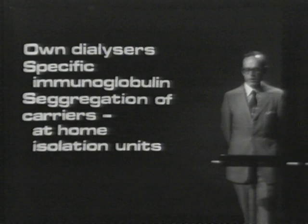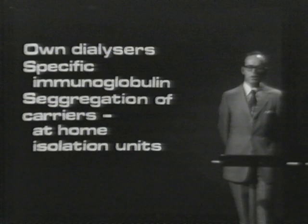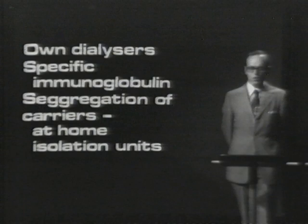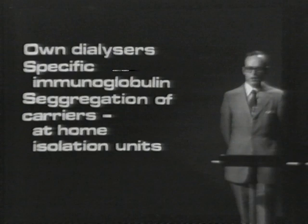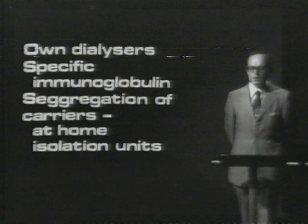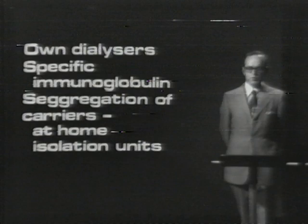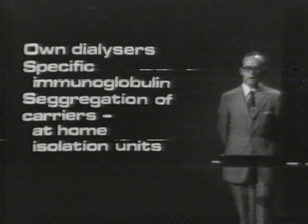The provision of individual dialysers is clearly not a practical solution. The use of specific Hepatitis B immunoglobulin is under trial. As for carriers, a patient who is a carrier of Hepatitis B antigen may be segregated at home or sent for treatment to isolation units. If the patient is on home dialysis, the infection may be spread to home contacts; on the other hand, staffing of isolation units can be problematic. At the present time, carriers of Hepatitis B antigen who require dialysis are dialyzed at home.